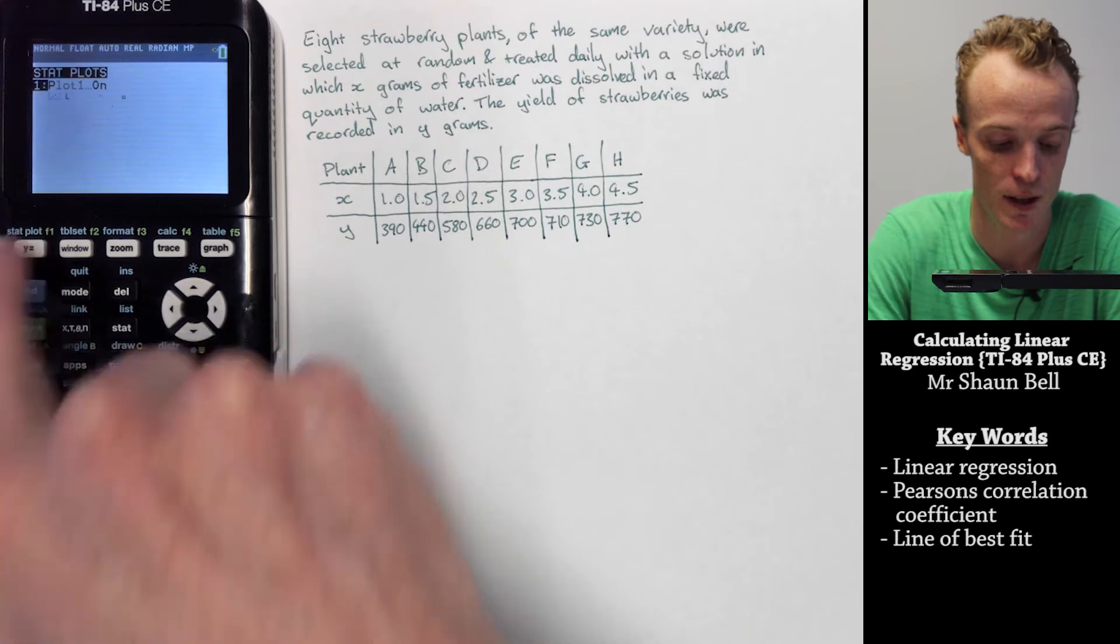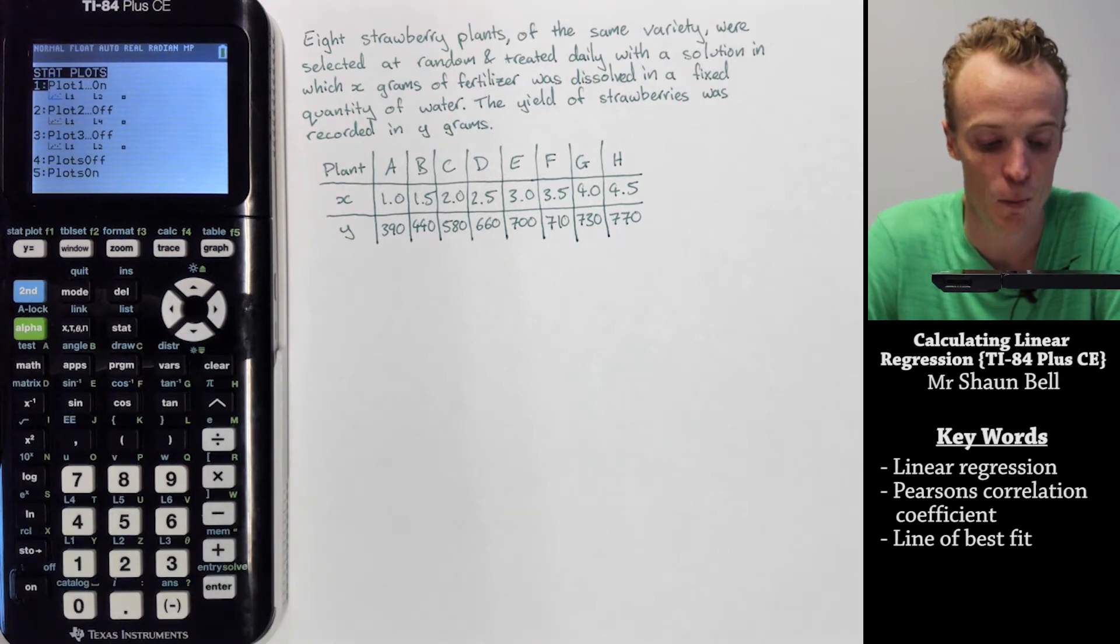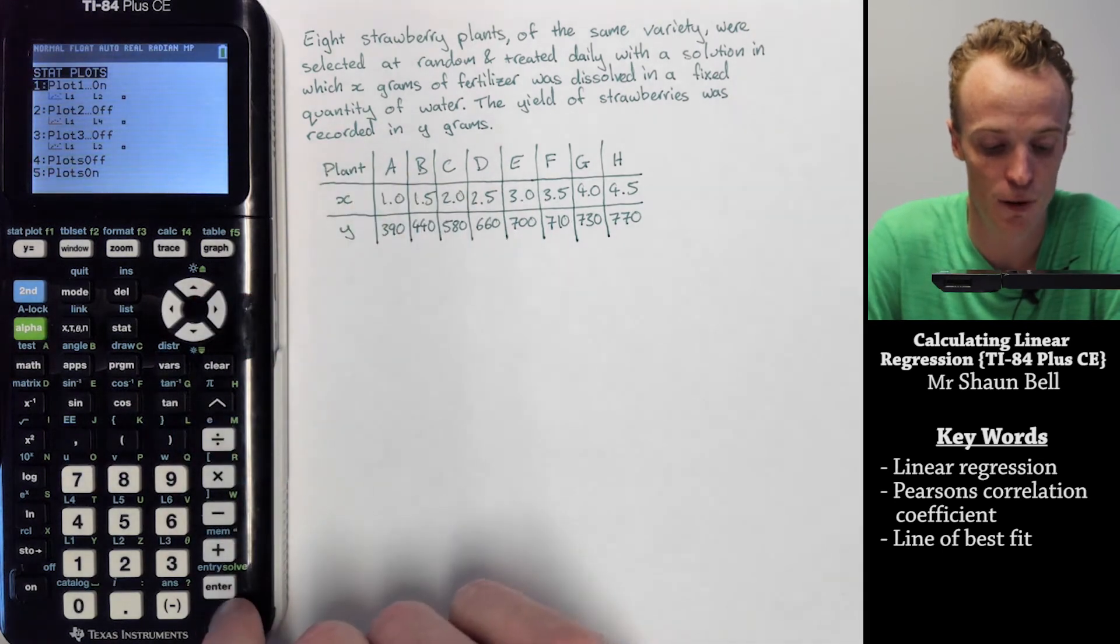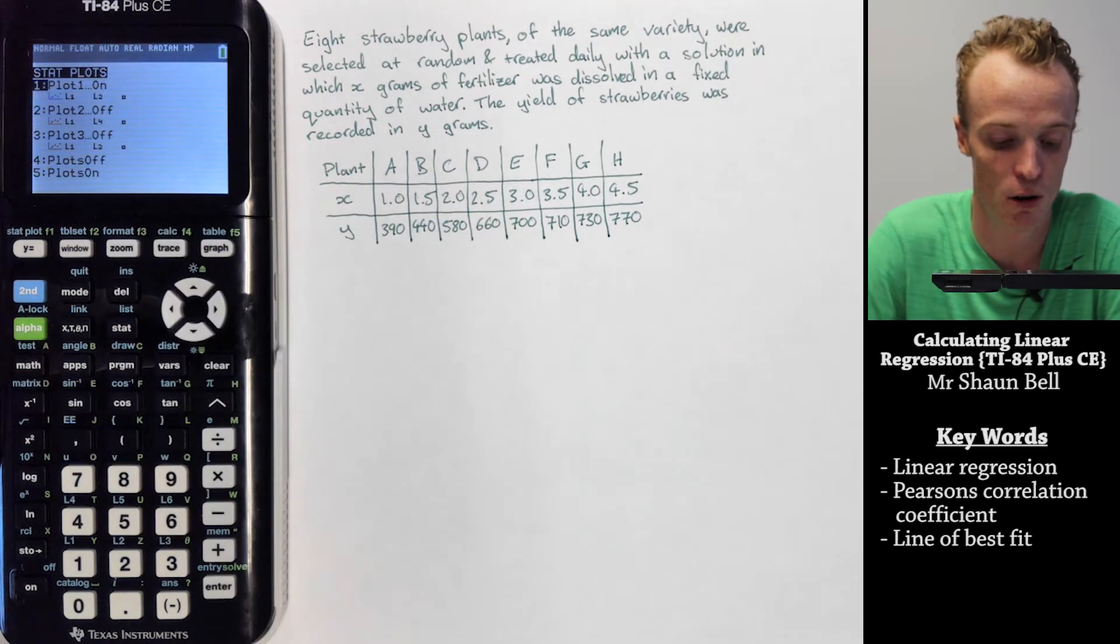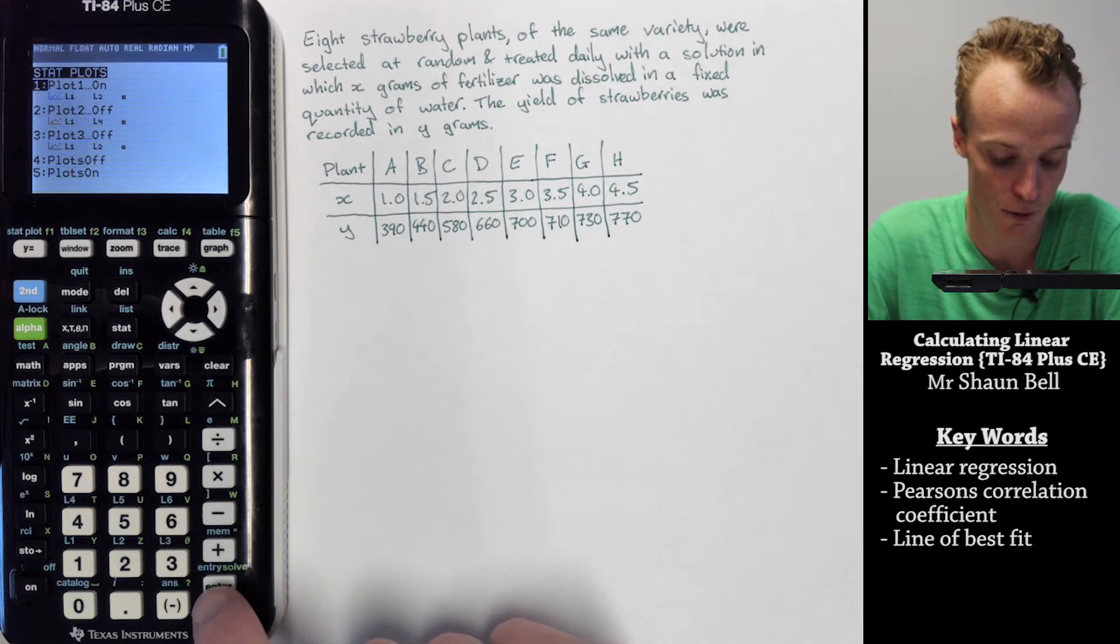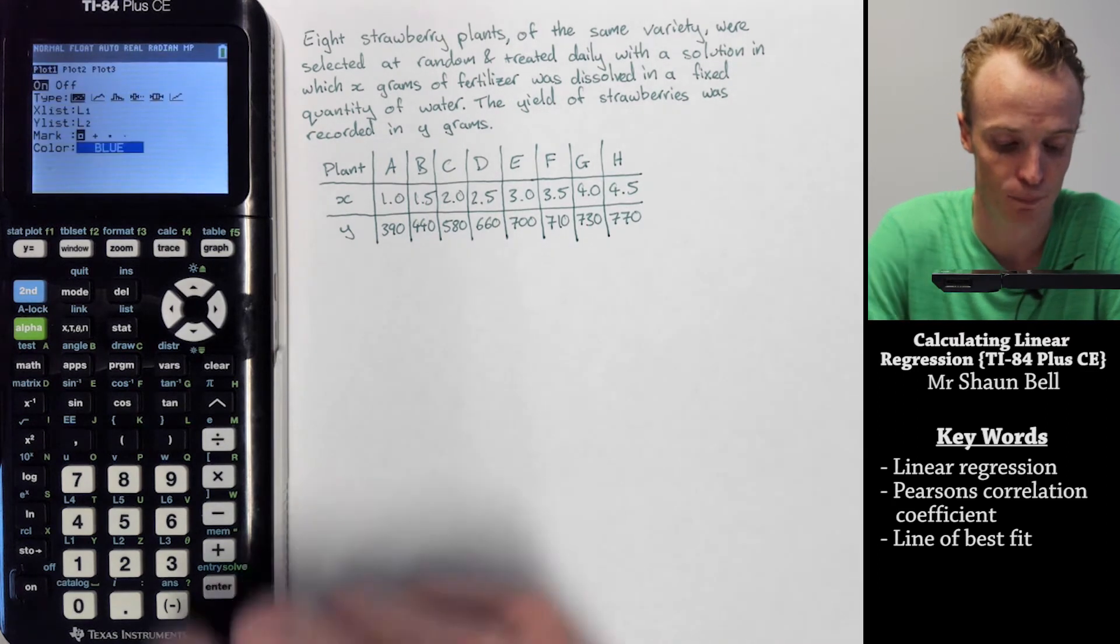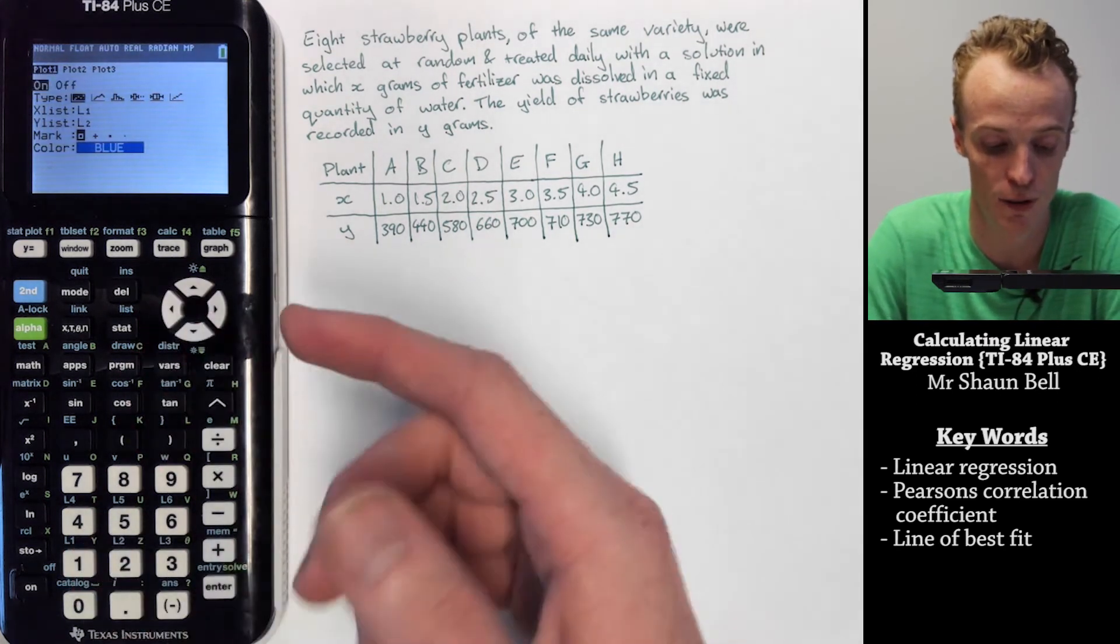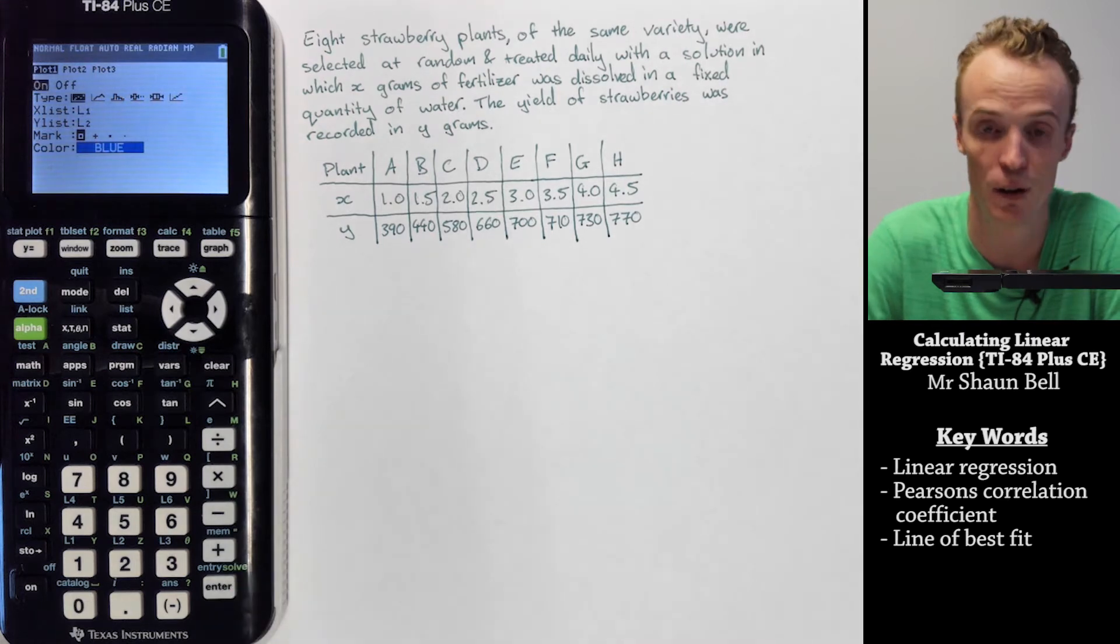So you go second statplot. From here we need to tell the calculator we're going to graph something. It will default as all three being off. If we enter into plot 1, you have the option to turn it on or off. We want it on here. If it's not on, just hit enter on the on.